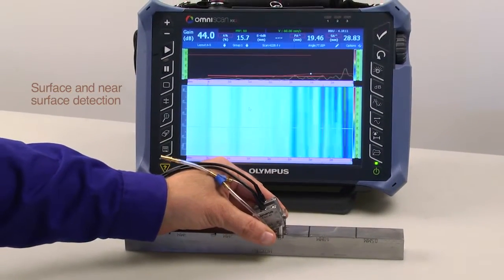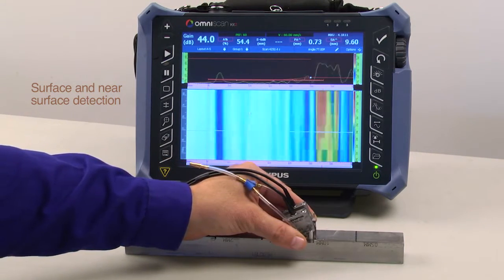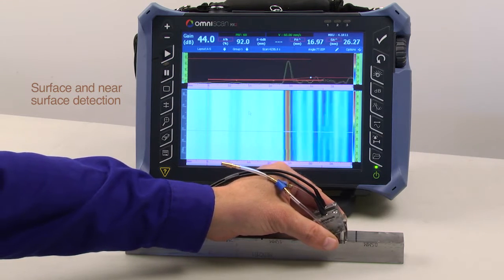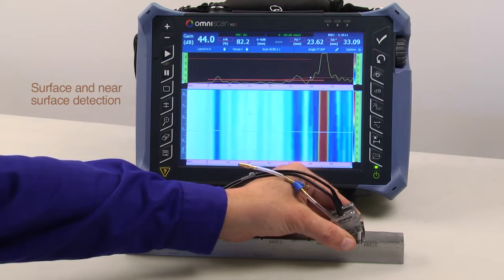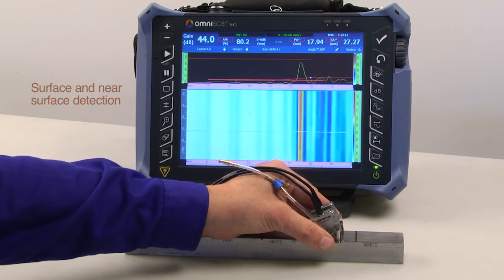In this example, using a wedge optimized for surface and near-surface detection, a 70 to 85 degree longitudinal wave S-scan is focused at 20 millimeters in front of the wedge face where shear wave pulse echo full V-skipping is not possible for shallow and surface-connected flaw detection.